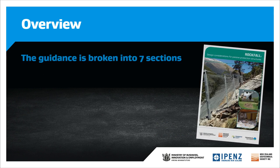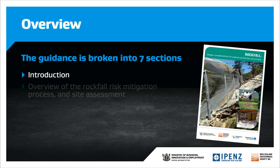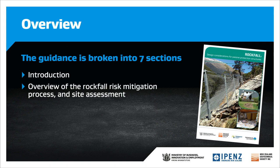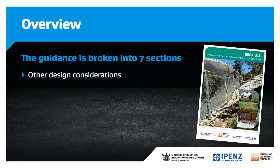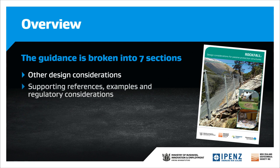The guidance is broken into seven sections: a brief subject introduction; an overview of the rockfall risk mitigation process and site assessment; rockfall mitigation; design considerations for passive structures; a reporting outline; other design considerations; and supporting references, examples, and regulatory considerations.